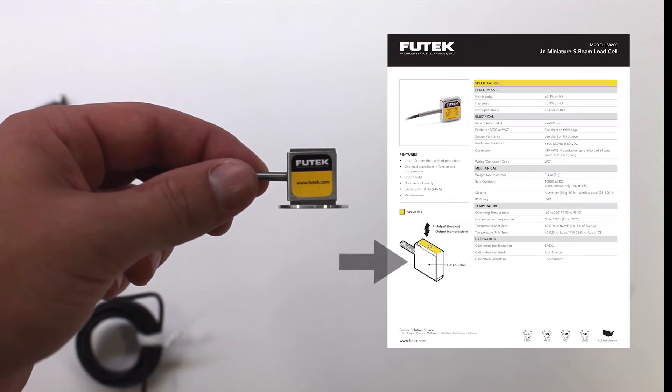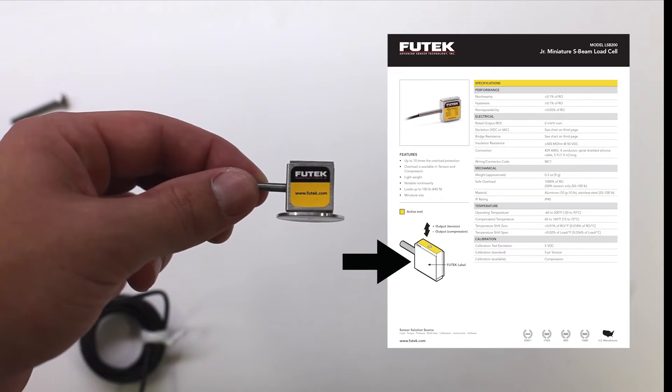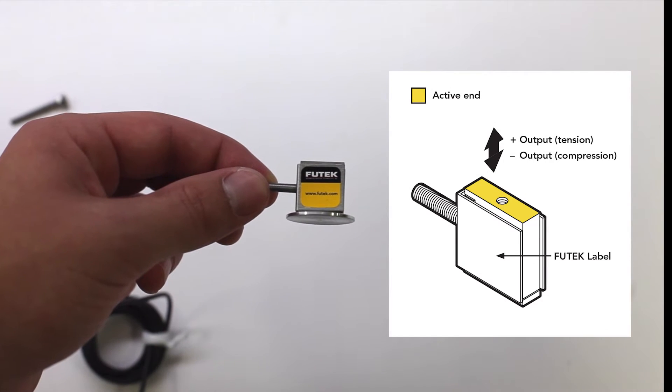It is important to note that the LSB200 and many other Futek load cells have a designated loading surface. This is specified in the sensor spec sheet.